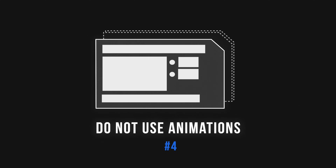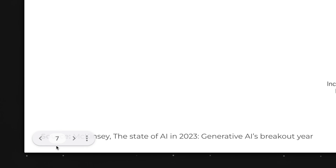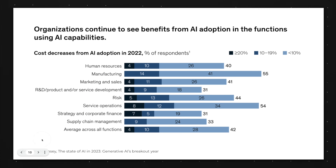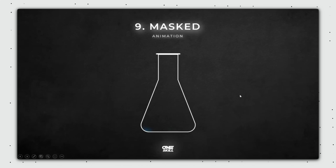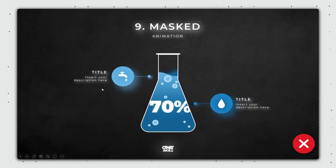Tip number four: do not use animations. Nine times out of 10, we don't have full control over the flow of our presentation. When presenting to senior leaders, we're often interrupted with questions like 'can we back up two slides?' or 'where'd you get that number in the second bullet point?' To answer these, we need to quickly jump around our presentation. Having fancy animations works against you since you have to frantically click around trying to find the right landing spot.